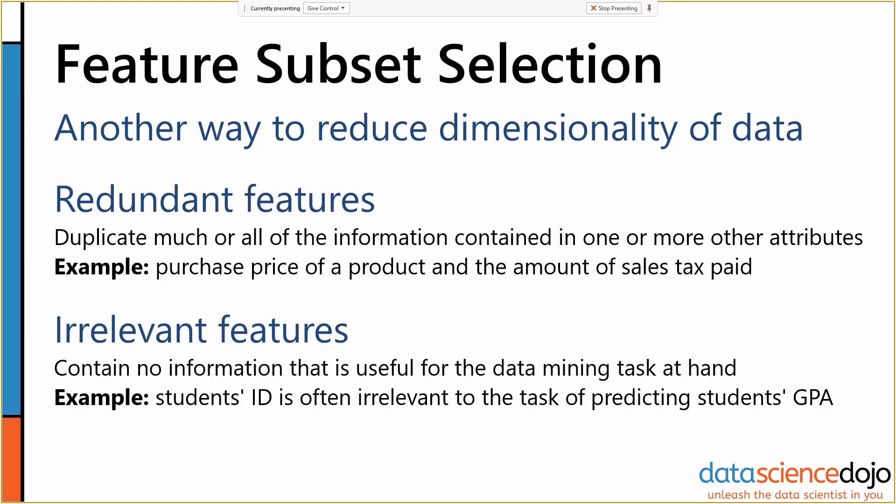We want to be very careful about trying to detect these things. A redundant feature example, for instance, is the purchase price of a product and the amount of sales tax paid on that product. Those things are, based on the state, completely connected — you can calculate one from the other. They're perfectly correlated. So you want to get rid of it, because it increases your dimensionality without adding new information.